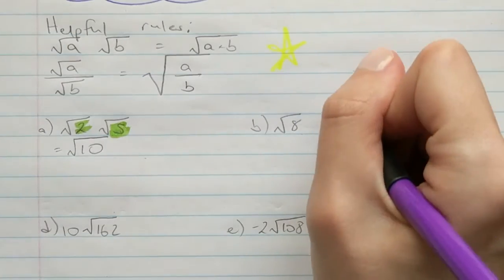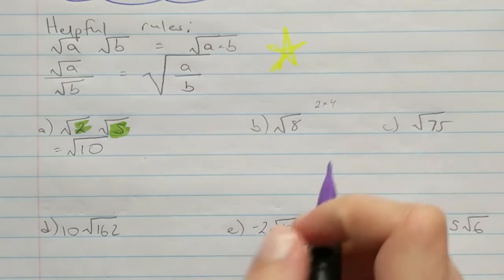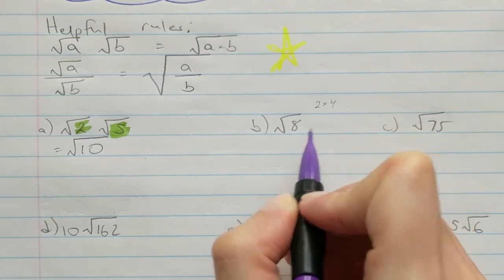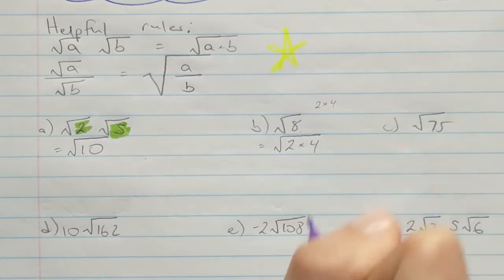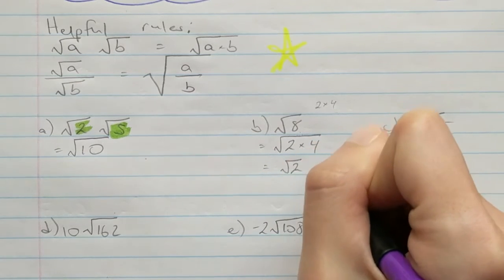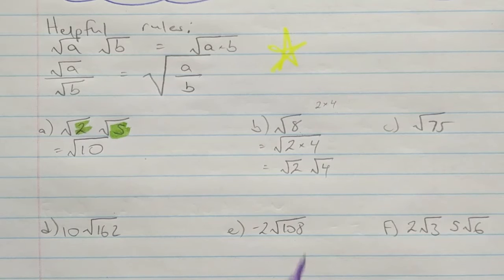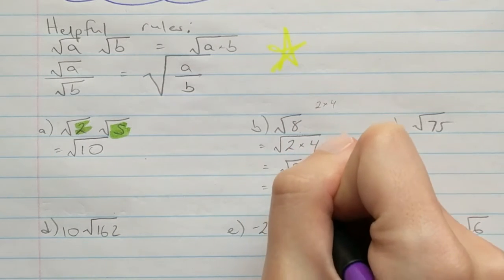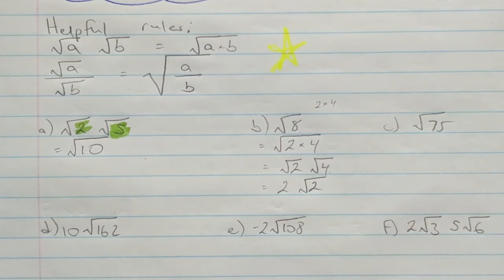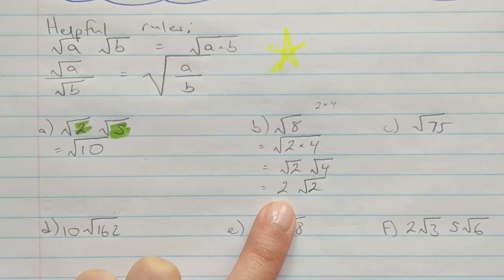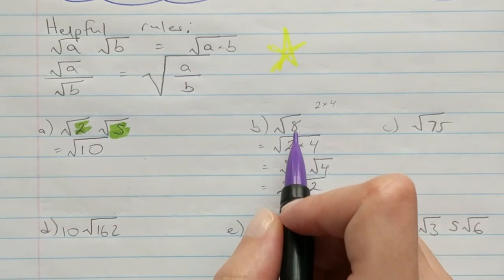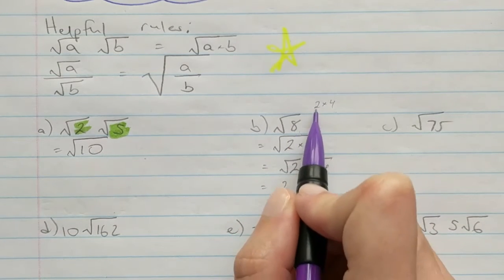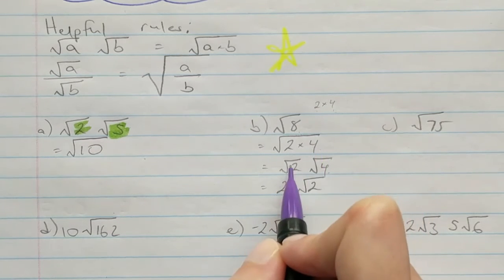Another example is √8. I know that 8 is the same thing as 2 × 4, and 4 is a perfect square. So √8 = √(2 × 4) = √2 × √4. I can take the square root of 4, which gives me 2, so my final answer is 2√2. We always want whole numbers out in front — otherwise writing the 2 at the end might look like √22.